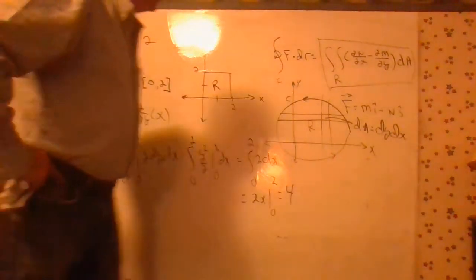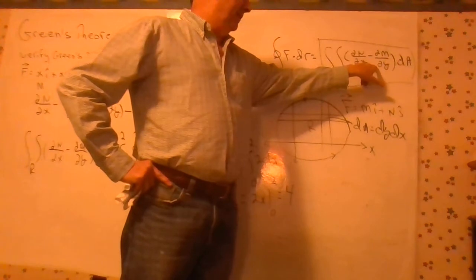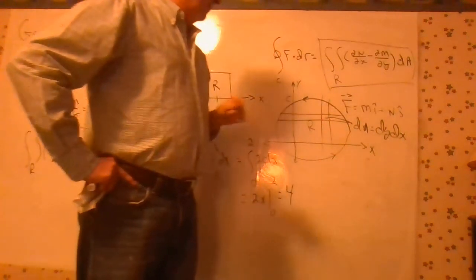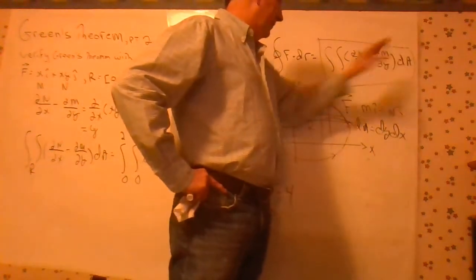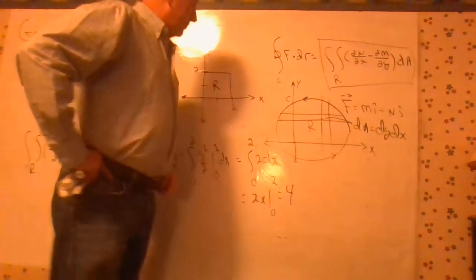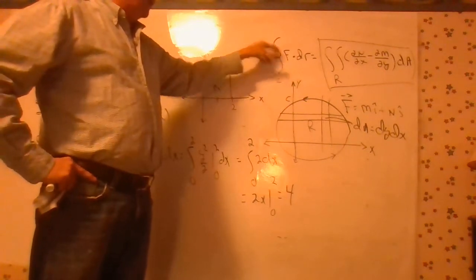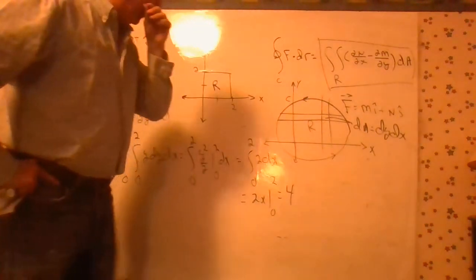If f is conservative, this is going to be 0, by the way, because that equals that. That's the test for conservative. So you'd integrate 0 dA and get 0. And, of course, for a conservative field, we know that the integration around a closed loop is going to be 0. So Green's Theorem makes sense.